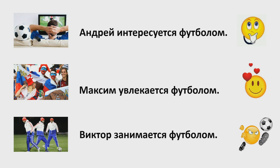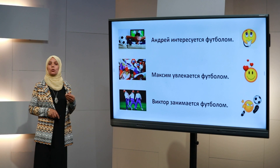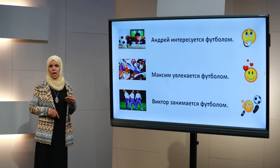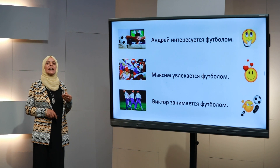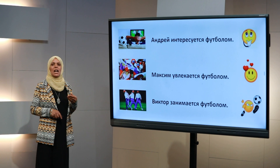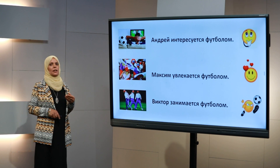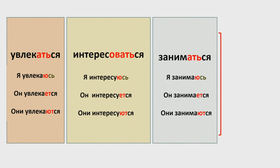Например: «я занимаюсь в лицее» — значит, я учусь в лицее. «Я занимаюсь в спортивном клубе» — значит, я тренируюсь. У нас глаголы «увлекаться», «интересоваться» и «заниматься» — это глаголы с суффиксом -ся. Как вы думаете, это глаголы первой или второй группы?